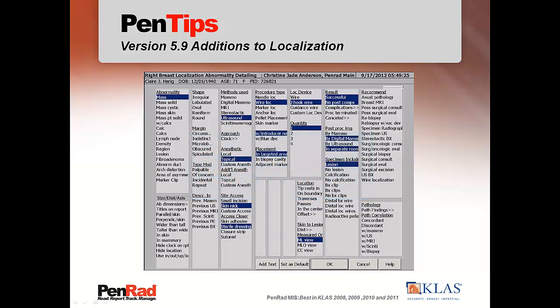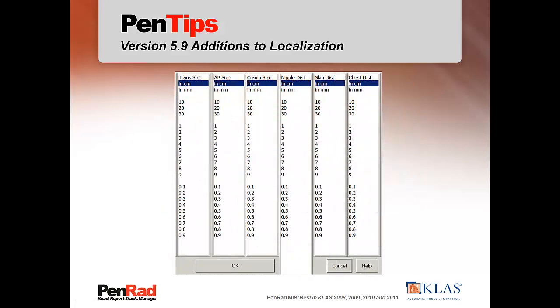As in all detailed exams, the ability exists to indicate three dimensions of orientation, distance from skin, chest, and nipple of the abnormality by tapping the ab dimension selector in the size dist axis window and selecting values. A preview button was also added to main screens for all exam types, providing instantaneous preview of the report.